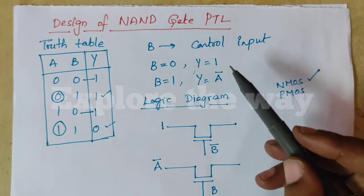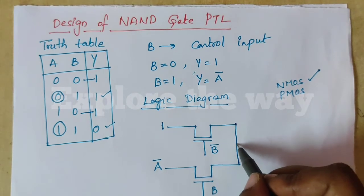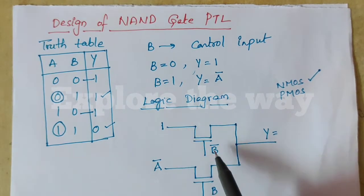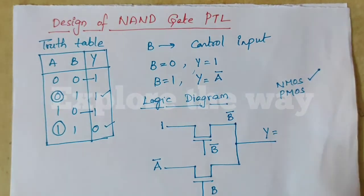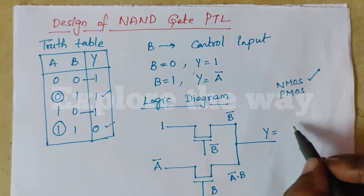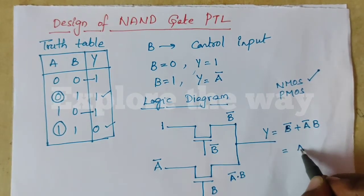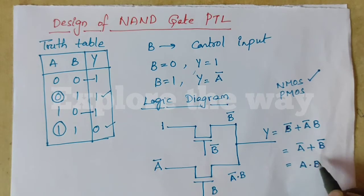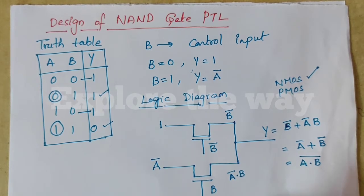At any instant of time, only one of these paths is active. That means the output is either 1 or A bar. We need to OR these two outputs. The logic function from the first path is 1 · B bar, which equals B bar. And from the second path, A bar · B. So the combined function is B bar + A bar·B, which equals A bar + B bar. Applying De Morgan's theorem, this is (A·B) bar — the NAND function. This is the logic diagram for the NAND gate using pass transistor logic.